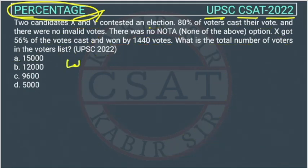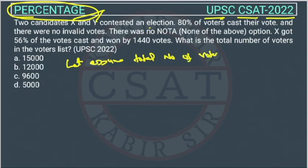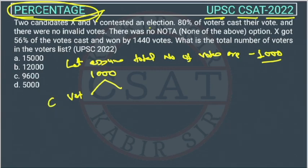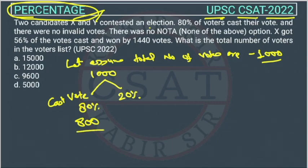In the alternative method, let us assume the total number of votes is 1000. In percentage questions we normally take a multiple of 100 for easy calculation. Since two percentages need to be applied, 1000 is convenient. Out of 1000, 80% cast their votes, so 800 people voted. 20% did not vote.